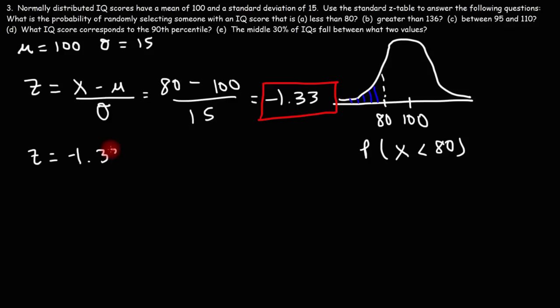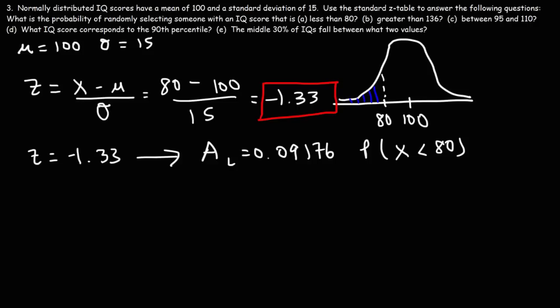Using the negative z-table, a z-value of negative 1.33 corresponds to an area of 0.09176. Multiplying by 100 gives 9.176%. So there is about a 9.176% probability of selecting someone with an IQ score less than 80.